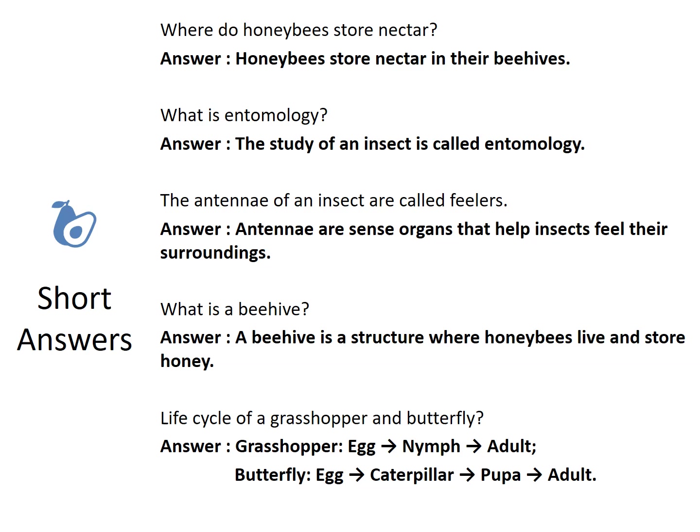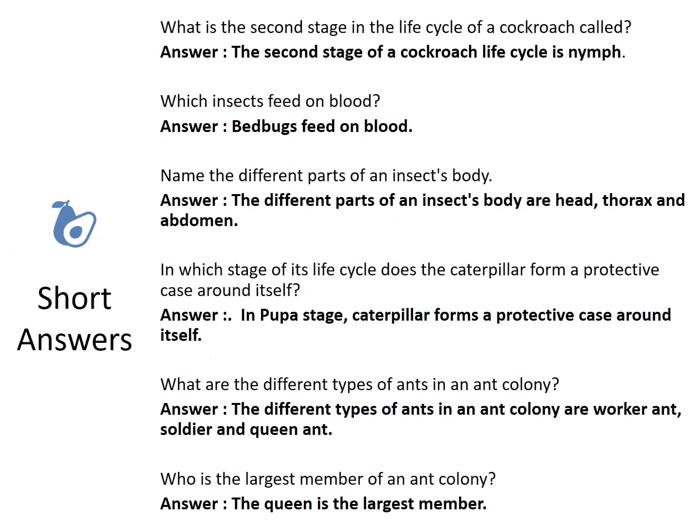What is a beehive? A beehive is a structure where honeybees live and store honey. The life cycle of a grasshopper is egg, nymph, adult. The life cycle of a butterfly is egg, caterpillar. What is the second stage in the life cycle of a cockroach called? Nymph.